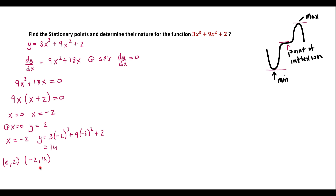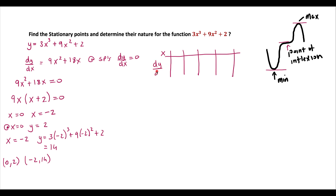Now that we have our stationary points, we want to know whether each is a minimum, point of inflection, or maximum. In order to do that, we draw a nature table. I'll show you two different ways to do this, and then we'll look at the second derivative test. In the table we put our x-values and the differentiated function dy/dx.